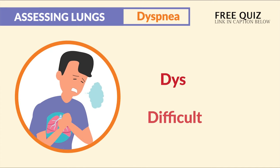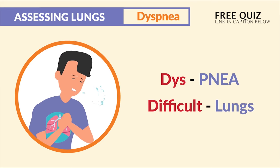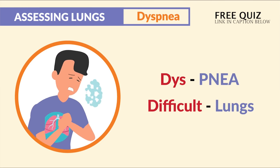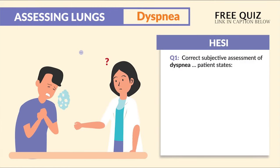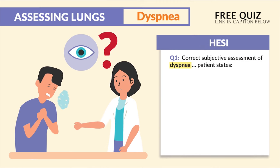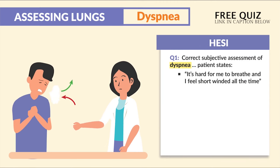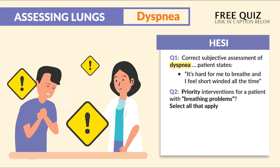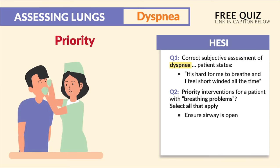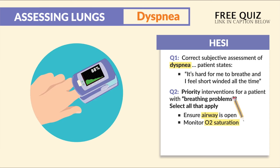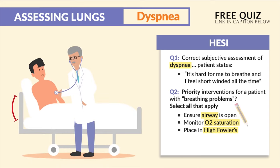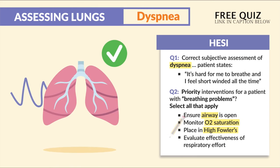The second key point is dyspnea — difficulty breathing or shortness of breath. Think 'dys' as difficult and 'pnea' as lungs. HESI mentions the correct subjective assessment of dyspnea when the patient states: 'It's hard for me to breathe and I feel short-winded all the time.' Priority interventions for a patient with breathing problems include ensuring the airway is open, monitoring O2 saturations, placing the client in high Fowler's position, and evaluating the effectiveness of respiratory effort.